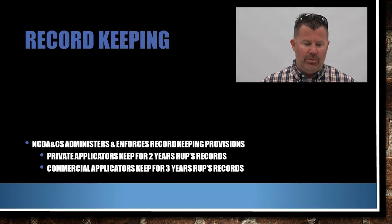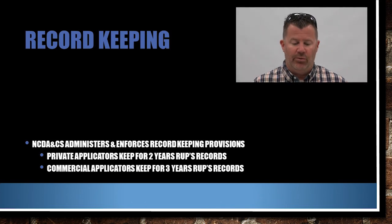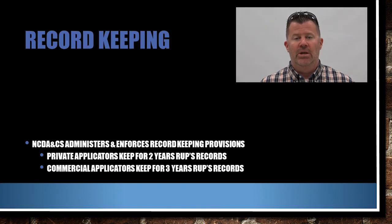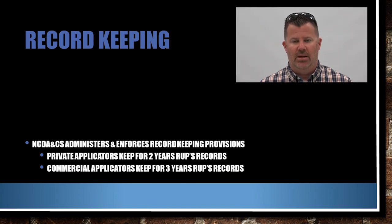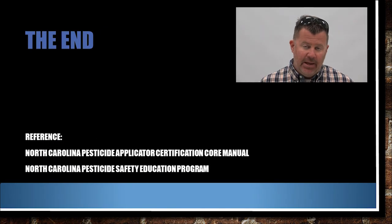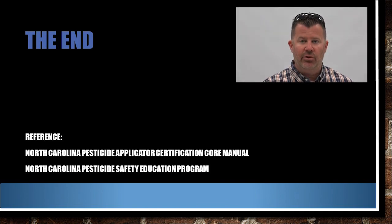Record keeping: the NCDA administers and enforces record keeping provisions. Private applicators must keep restricted use pesticide records for two years; commercial applicators for three years. But keep records of everything you do — it's part of business and it will protect you in the long run. That concludes Chapter 2 of the North Carolina Pesticide Applicator Certification Core Manual. Thank you.